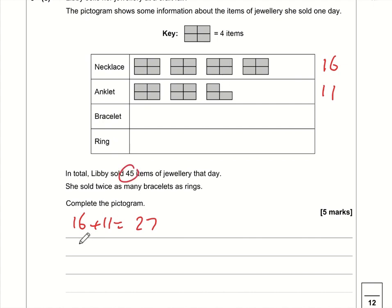And we know that in total there was 45, and 45 take away 27 is 18. So the bracelet and the ring must add up to 18. Now we know that she sold twice as many bracelets as rings, so it's a ratio: bracelets to rings is 2 to 1. So what that means is two-thirds is bracelets and one-third is rings.